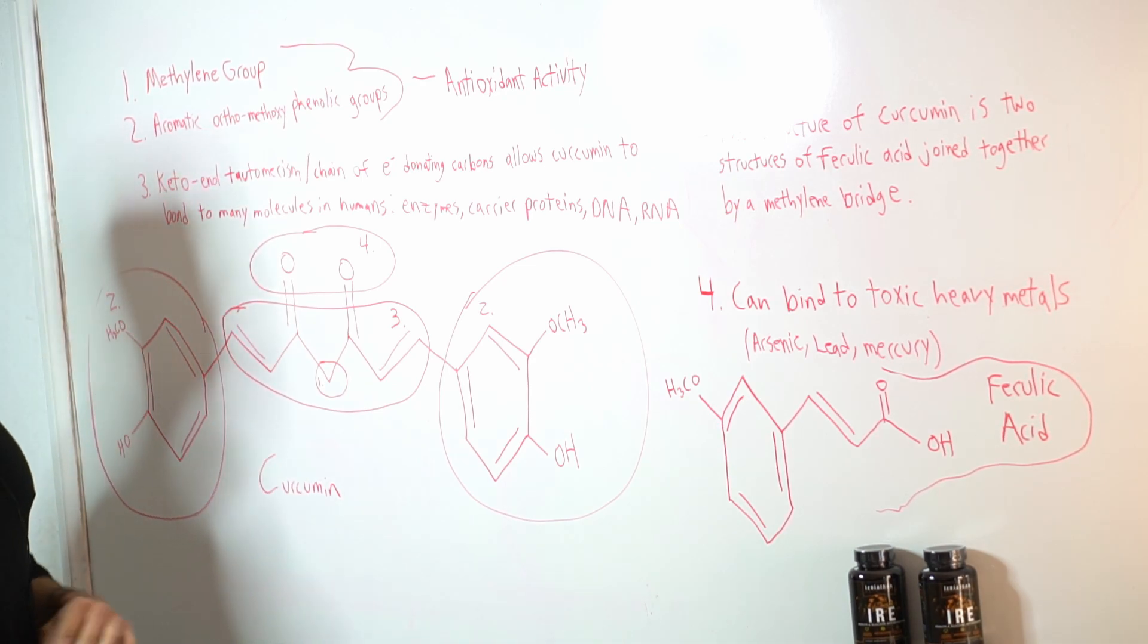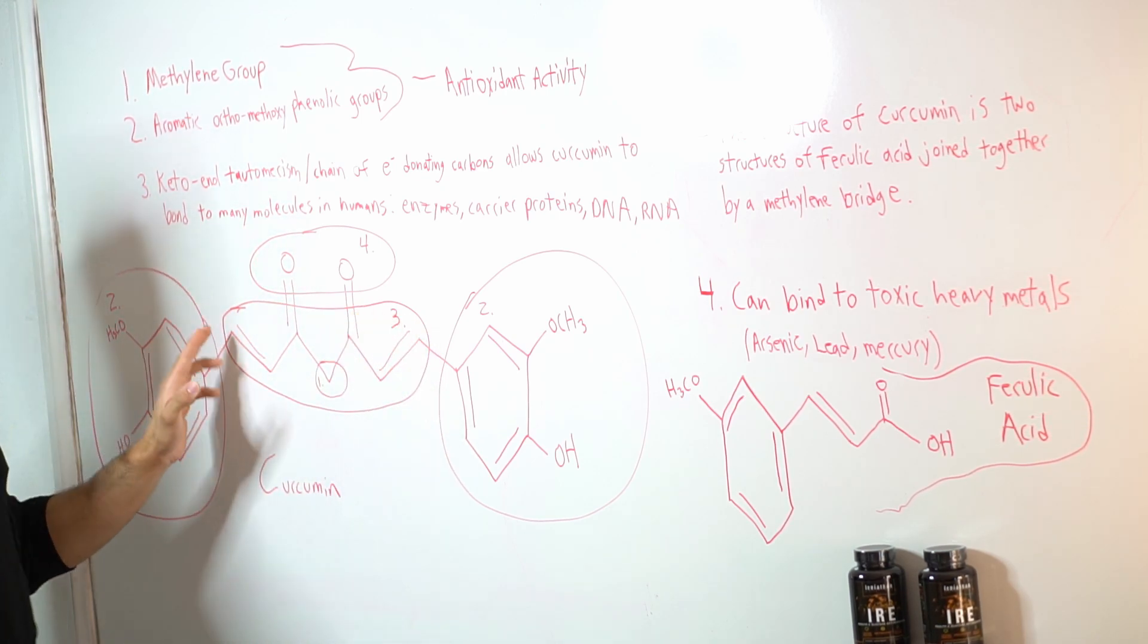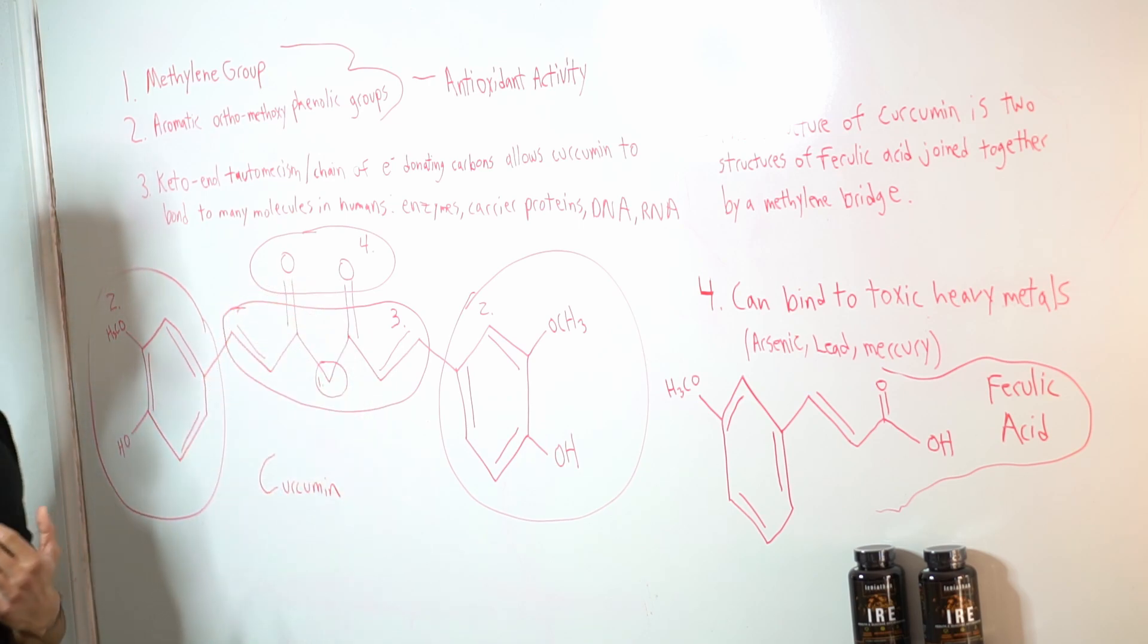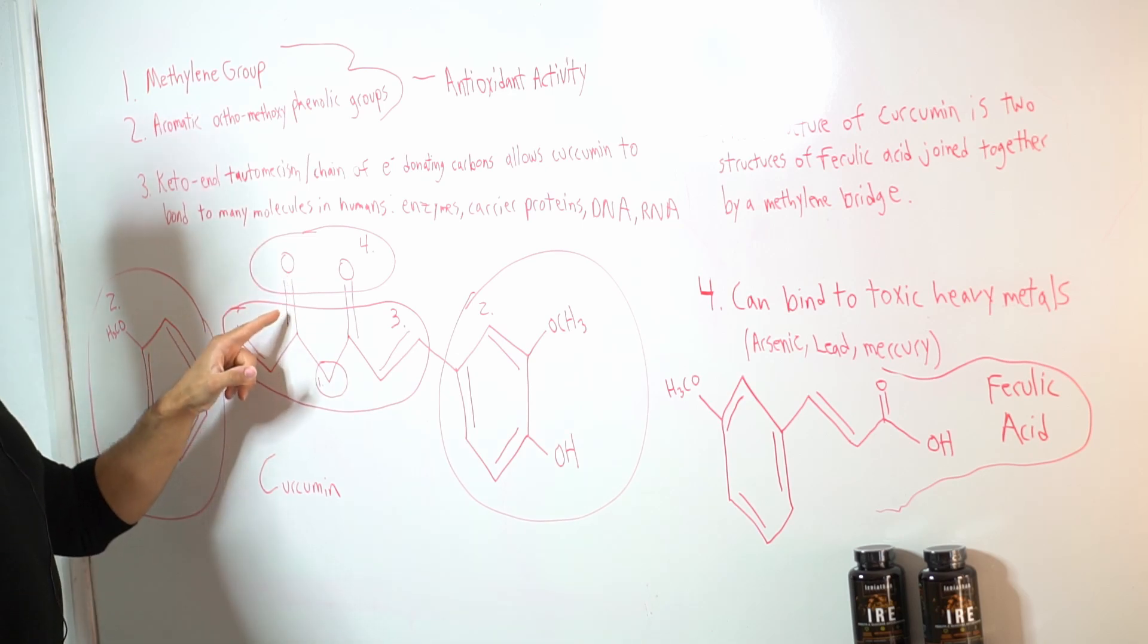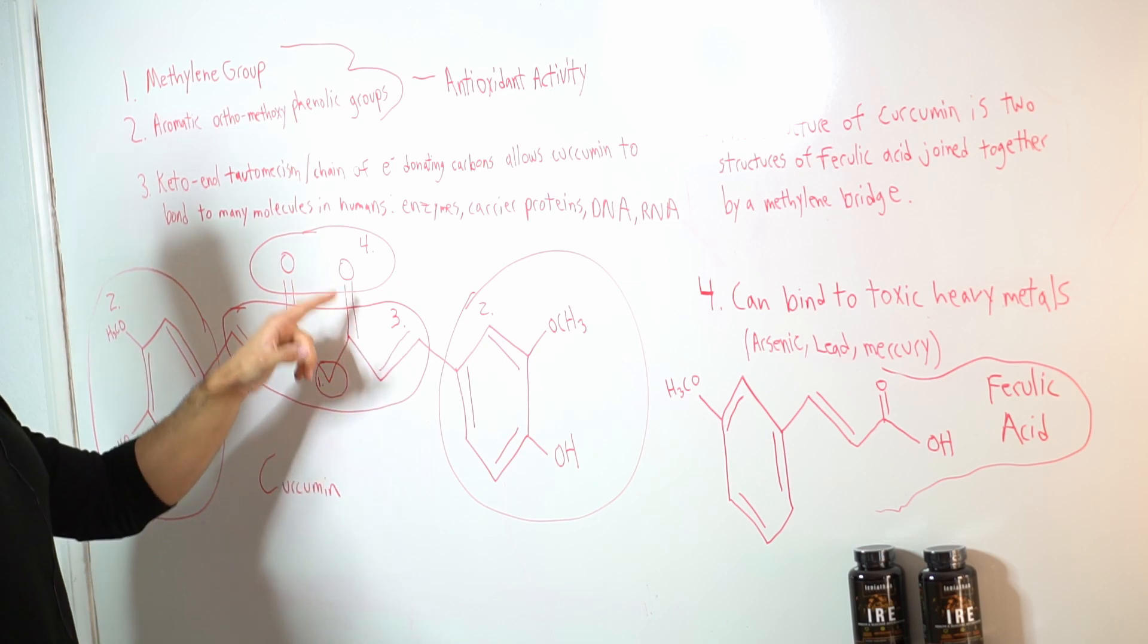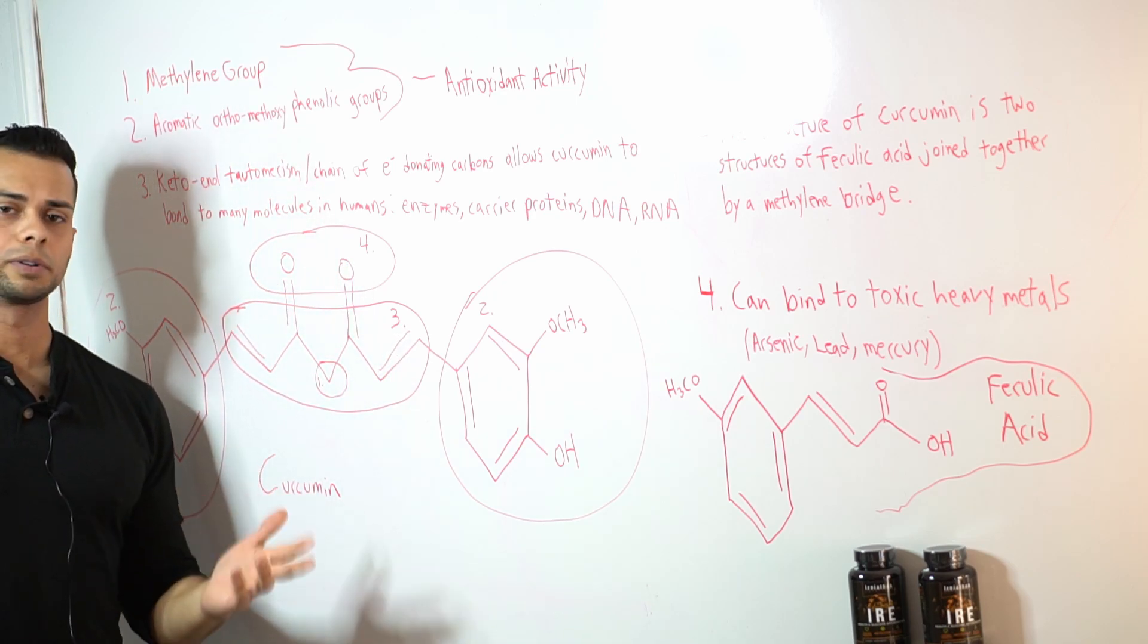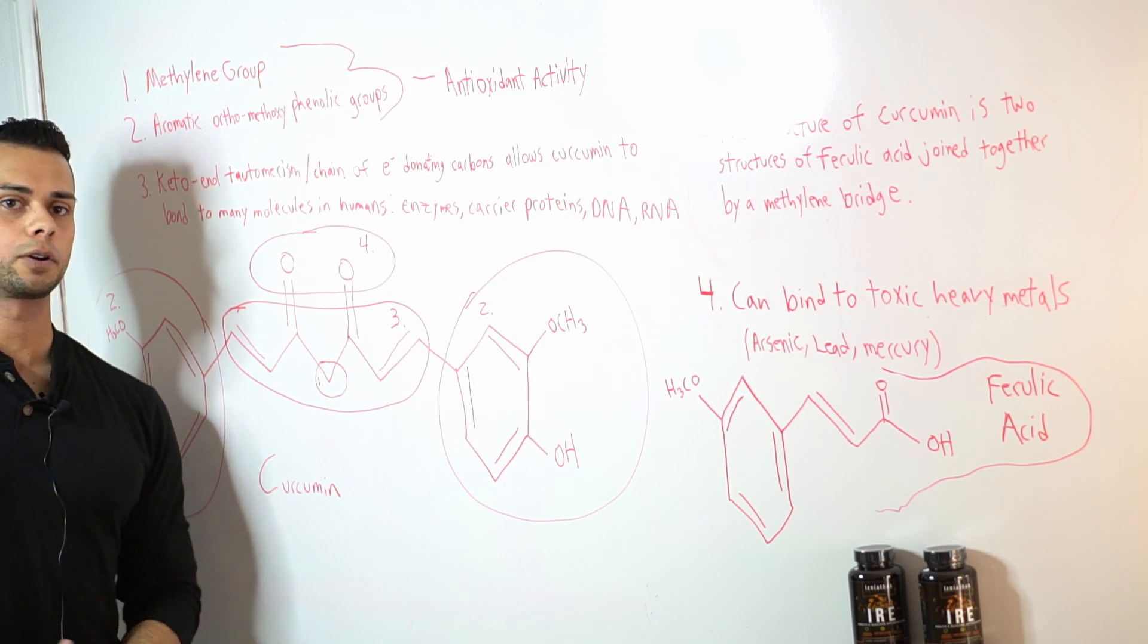Okay so moving on to another part of the structure which I have labeled here as number three we have this carbon chain with these two oxygen groups with double bonds on them. Now this pair of oxygen groups with double bonds can form a structure, this is known as a ketone group and this can transform by grabbing a hydrogen from here and having an OH group up here which basically results in a more stable structure. There's no reason to really get into that right now but this is just responsible for more of the stability properties of curcumin.